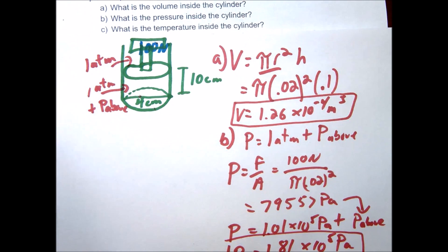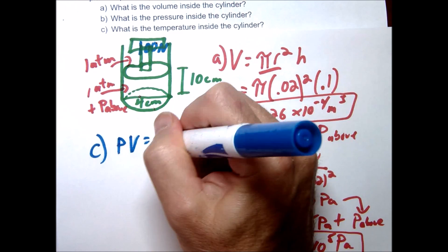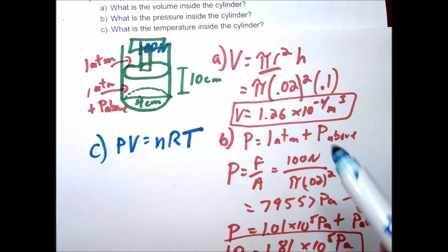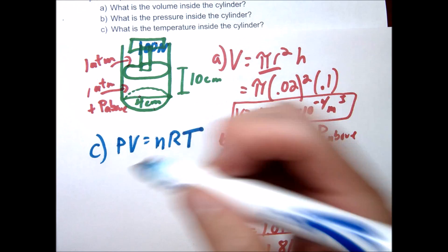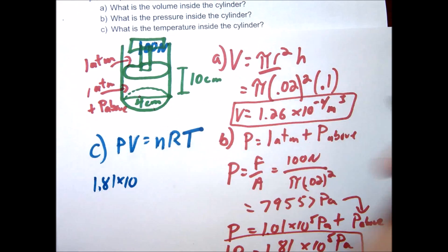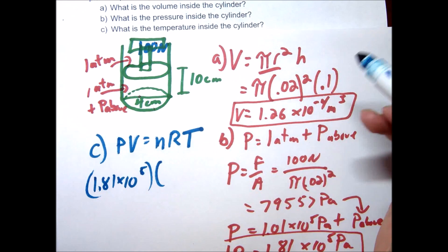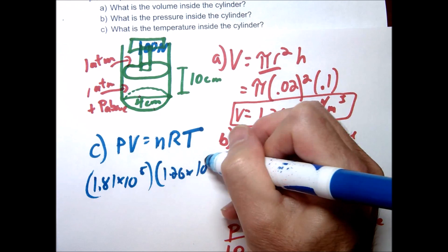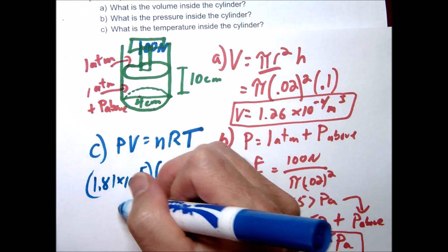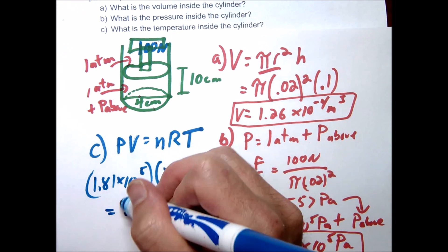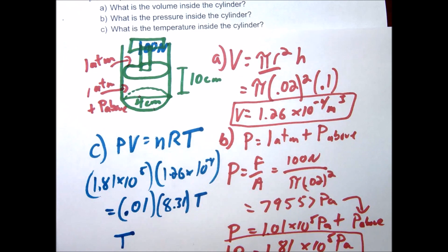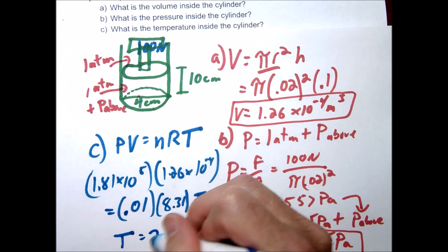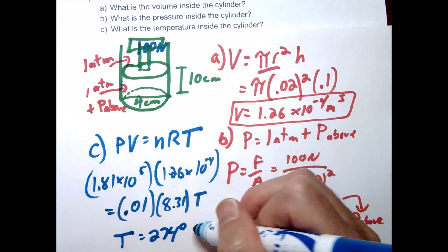Question C asks for the temperature inside. We use the ideal gas law: PV = nRT. We just found our pressure and volume, and we know n = 0.01 moles and R = 8.31. Plugging in: 1.81 × 10⁵ times 1.26 × 10⁻⁴ equals 0.01 times 8.31 times T. Solving gives T = 274 Kelvin.